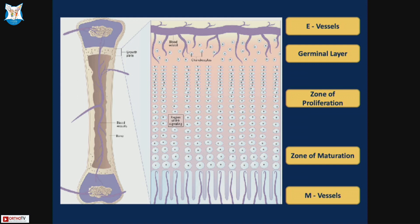Looking at the cross-section of a growth plate, starting from the epiphyseal side to the metaphyseal: first come the epiphyseal vessels (E vessels), then the germinal layer, then the zone of proliferation as cartilage cells pass proximally. Next is the zone of maturation where calcification of chondrocytes begins. The junction of ossified and non-ossified chondral layers is the zone of provisional calcification — the stress area where most injuries occur. Finally come the metaphyseal vessels (M vessels). An important outer structure is the perichondral ring, which can also be injured iatrogenically.